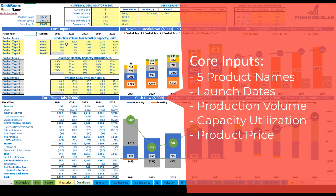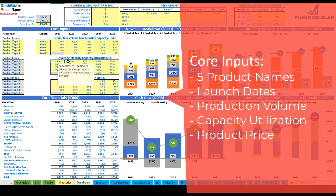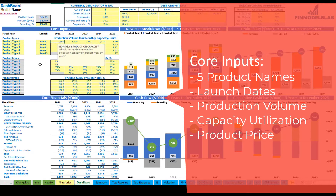The next step is to set up your production volume — maximum monthly capacity in units. This means that in 2021 for product type 1 you can produce a maximum of 1,000 units per month. Obviously you will not produce the maximum monthly capacity, so there is a monthly capacity utilization percentage by product type and by year. For example, if you put 80% it means that for 2021 on average you will produce 800 units per month instead of the maximum 1,000.